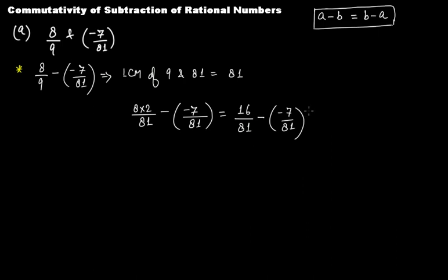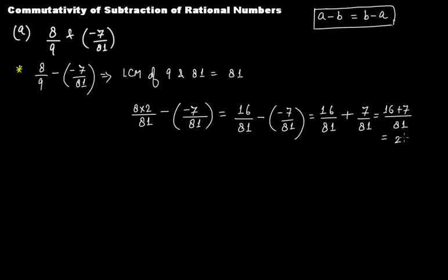Now if we open the bracket: inside the bracket is minus, outside the bracket is minus, so this becomes plus 7/81. Since the denominators are the same, we get 81 as the denominator and 16 plus 7 in the numerator, which gives us 23/81. This is the result when we subtract −7/81 from 8/9.